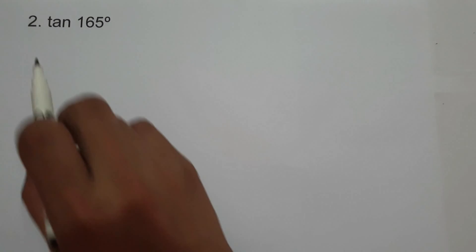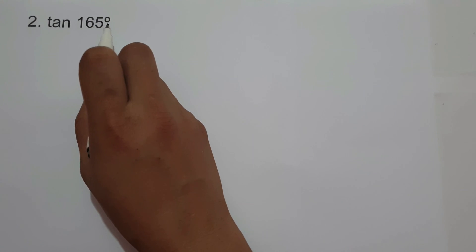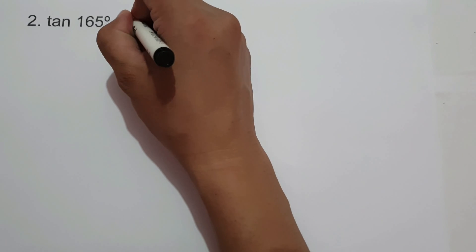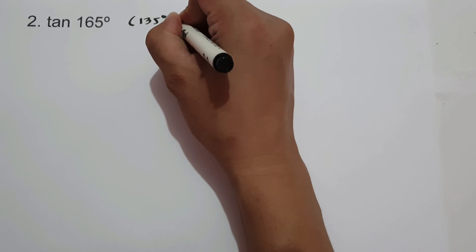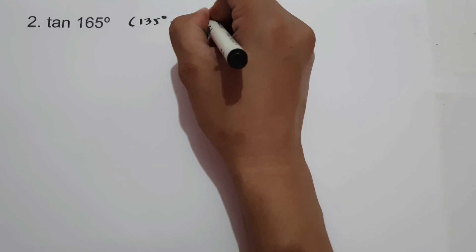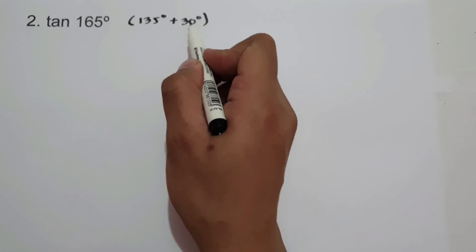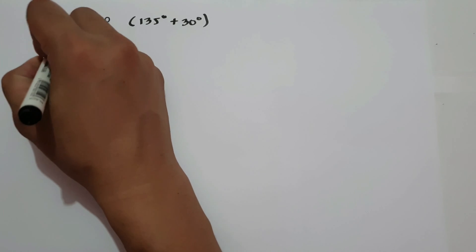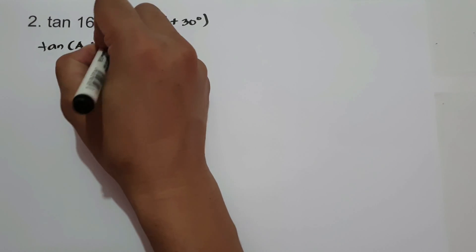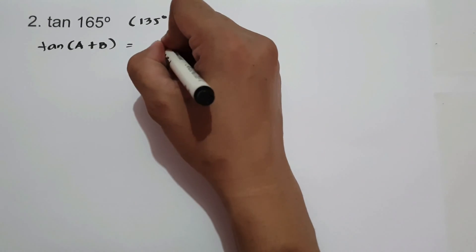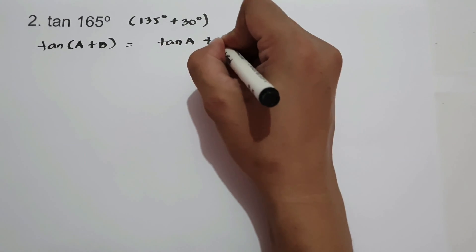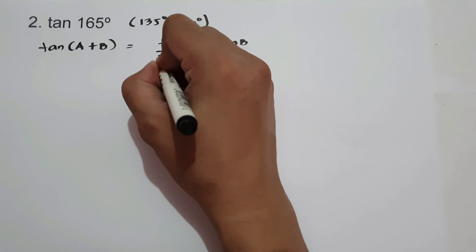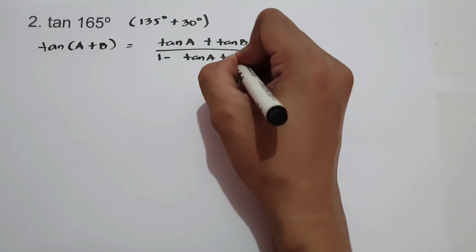On example number 2, we have tangent 165 degrees. What two angles in the unit circle can be added to get 165 degrees? That is 135 degrees plus 30 degrees. Since 135 + 30 = 165, we are going to use the formula tangent(A+B) = (tan A + tan B) / (1 - tan A · tan B).